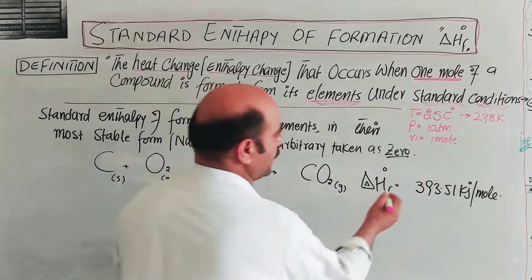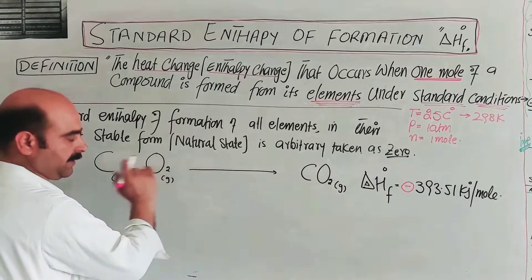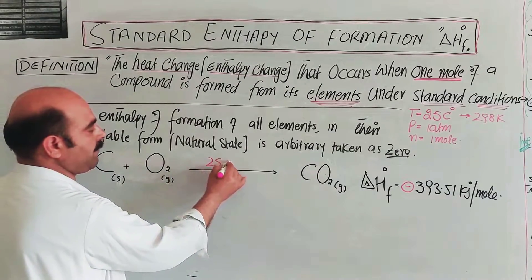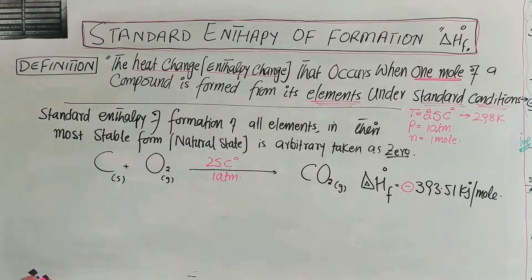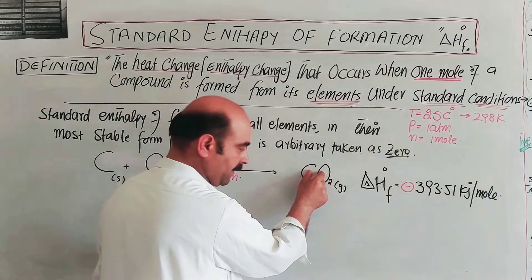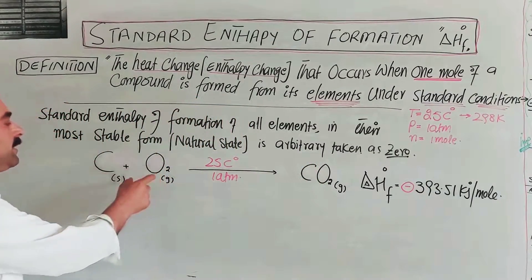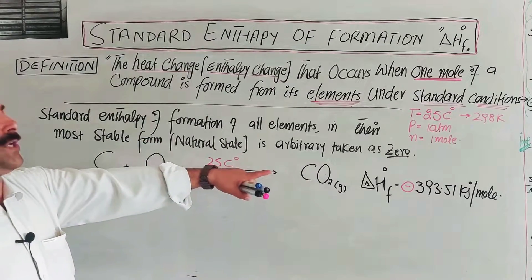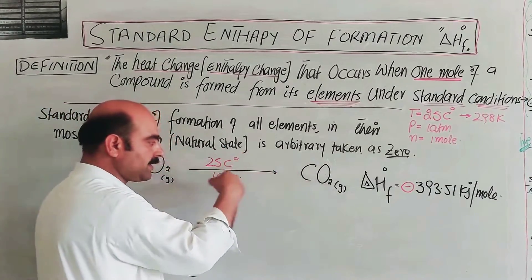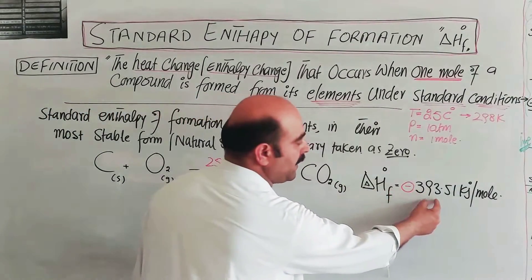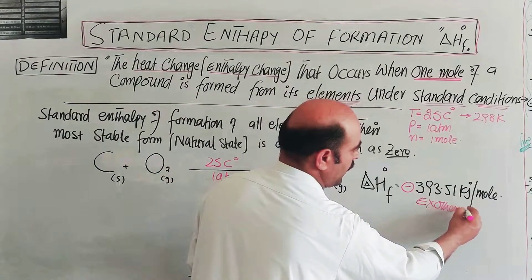This is a combustion process, which is exothermic, hence the negative sign. Under standard conditions, the standard enthalpy change during the formation of one mole of carbon dioxide from its elements — carbon and oxygen — is minus 393.51 kJ per mole. This means heat is released, confirming the reaction is exothermic.